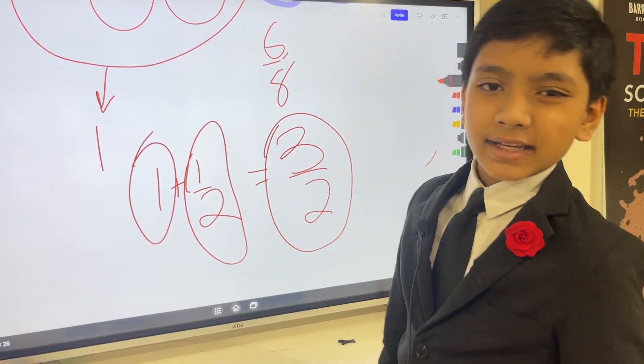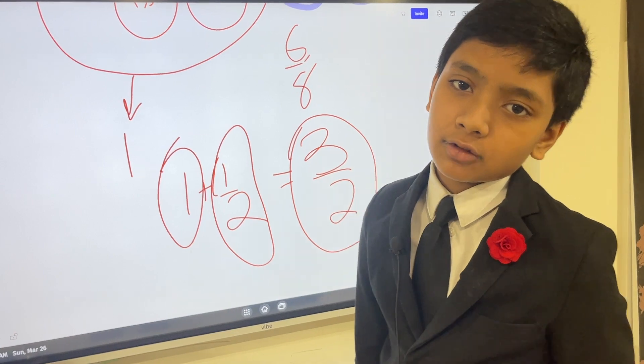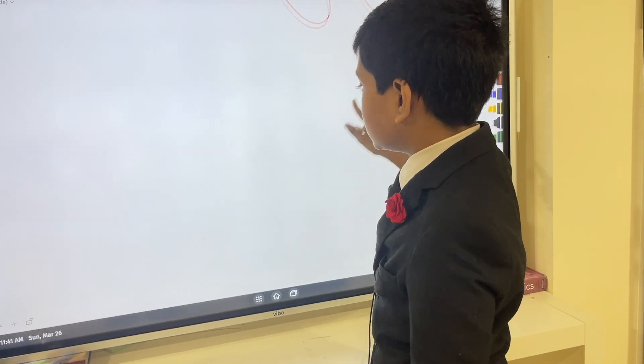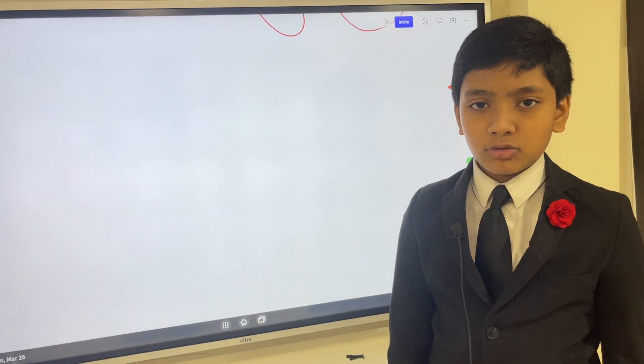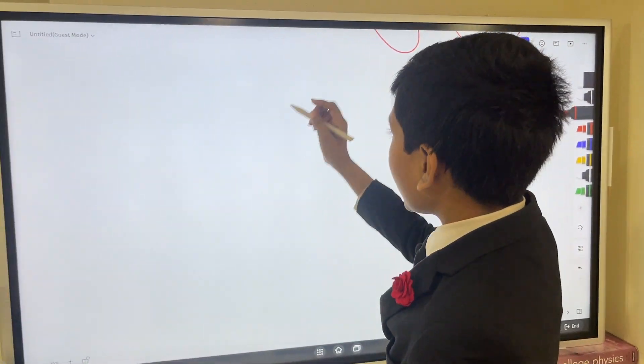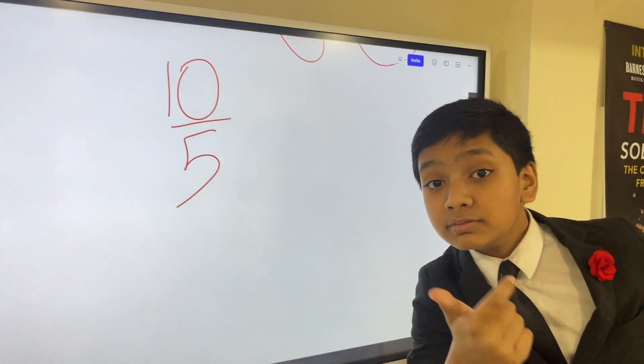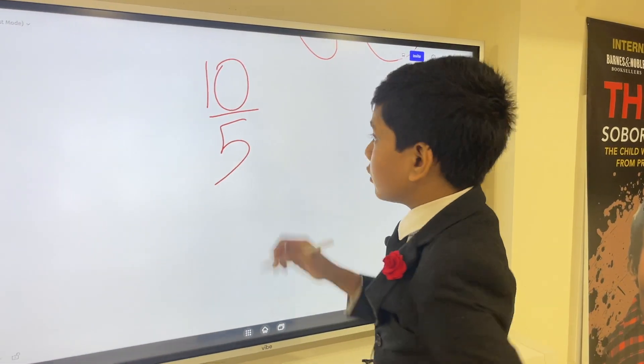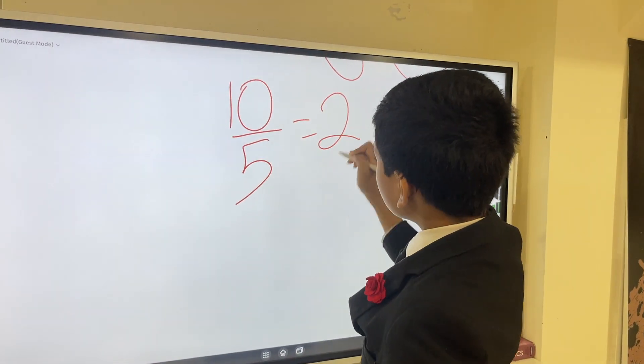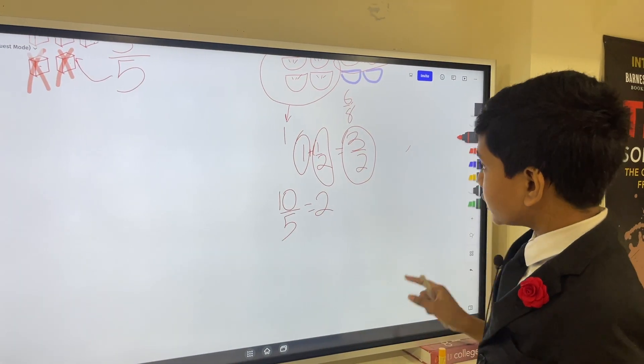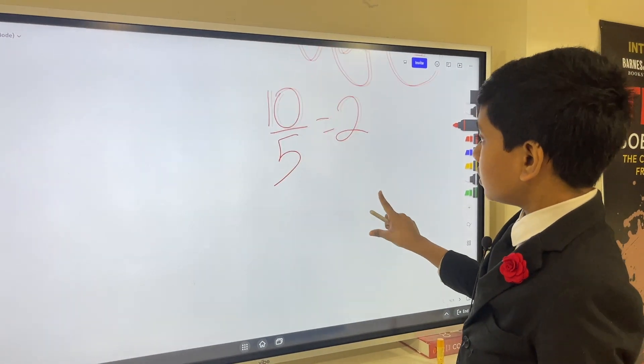Well, fraction arithmetic is basically the same as regular arithmetic. So, fractions are like little division problems. For example, the fraction 10 over 5, and I'm sure this comes to your head immediately, 10 over 5 is supposed to be 2.